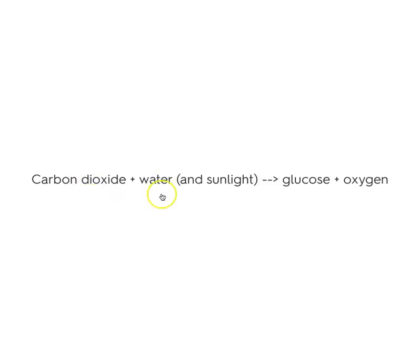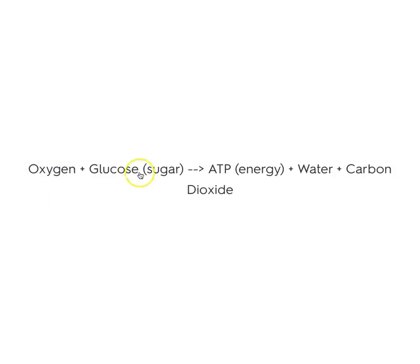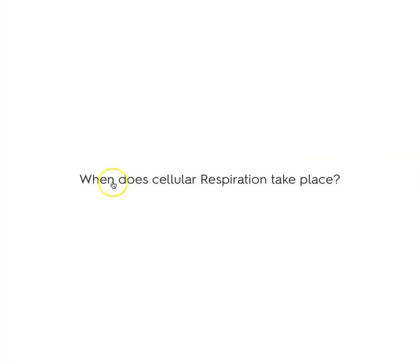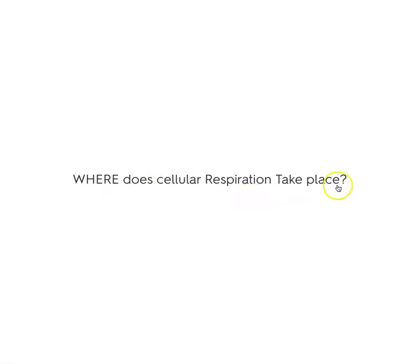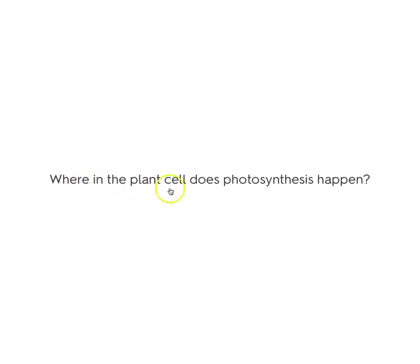Name the three types of organic molecules: carbohydrates, lipids, proteins. What is the photosynthesis formula? Carbon dioxide plus water, using sunlight, makes glucose sugar and oxygen. What is the cellular respiration formula? Oxygen plus sugar gives you ATP energy — cellular respiration makes energy, water, and carbon dioxide. Cellular respiration takes place all the time, 24/7, as long as the organism is living, and it happens in the mitochondria.